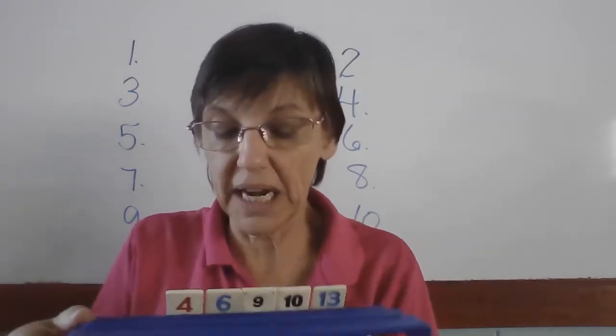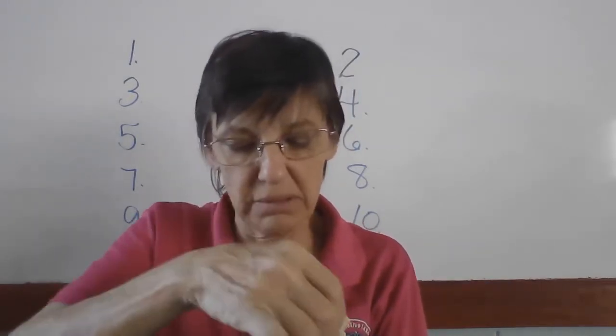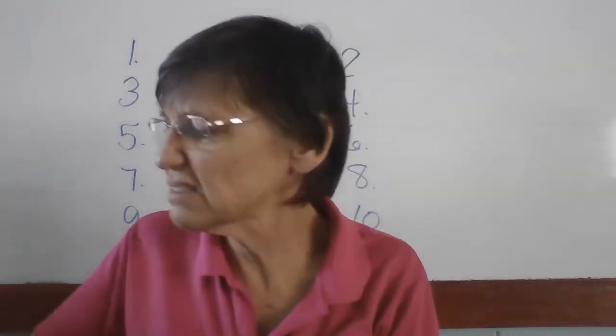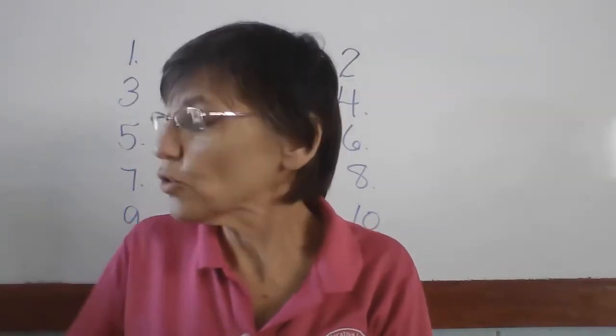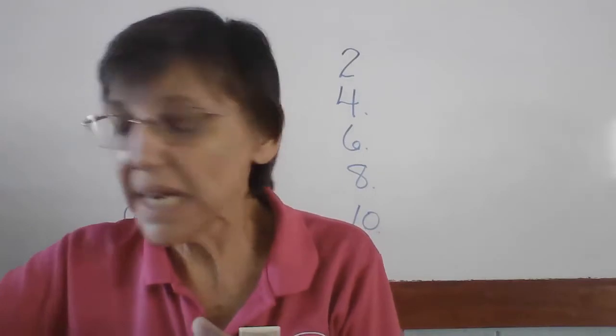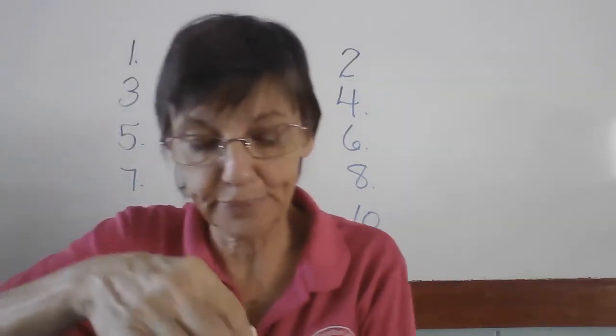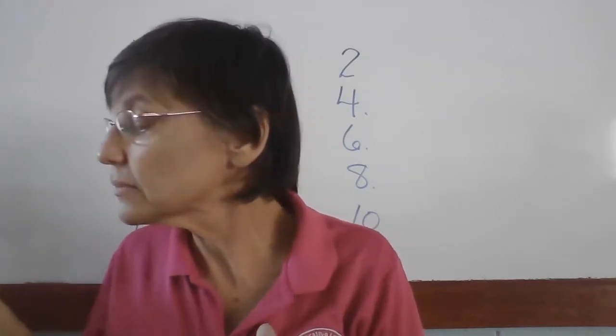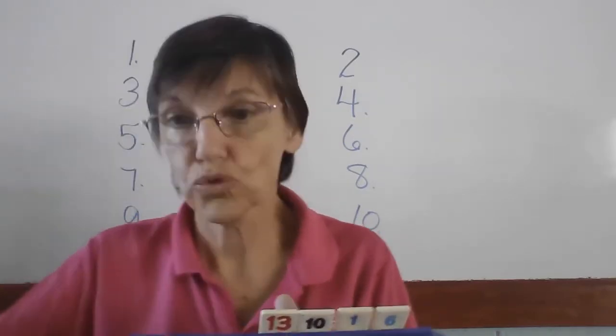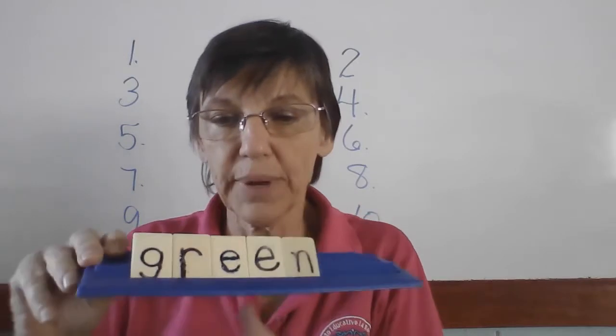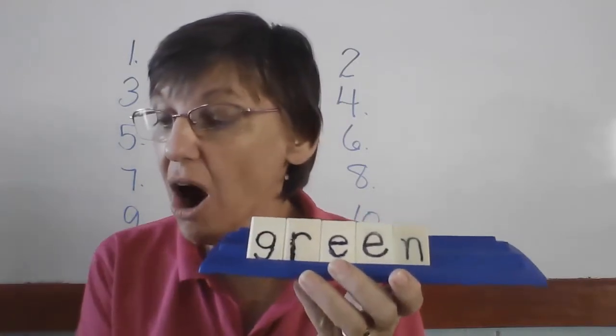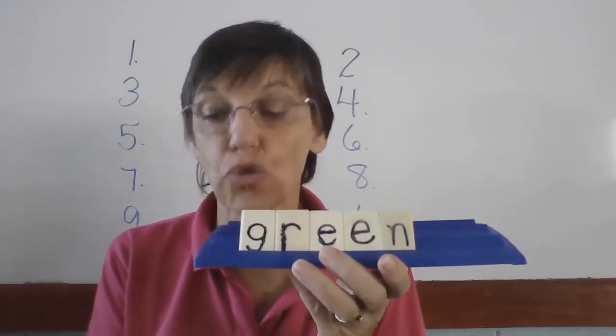Next word is green. Now this is one you should learn to spell. You should know how to spell your colors. Green. Green. Green. Green. Green. Green. Green. Here we go. Green. G-R-E-E-N. Green.